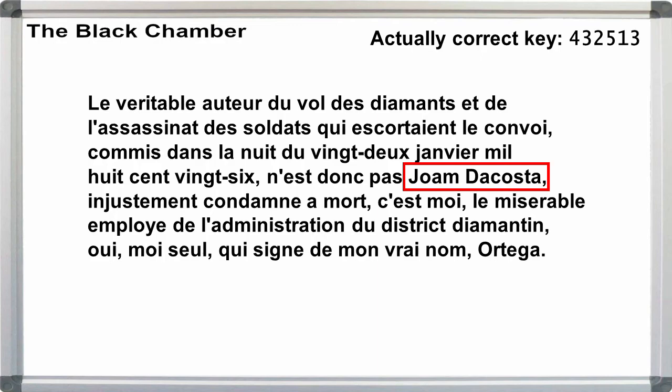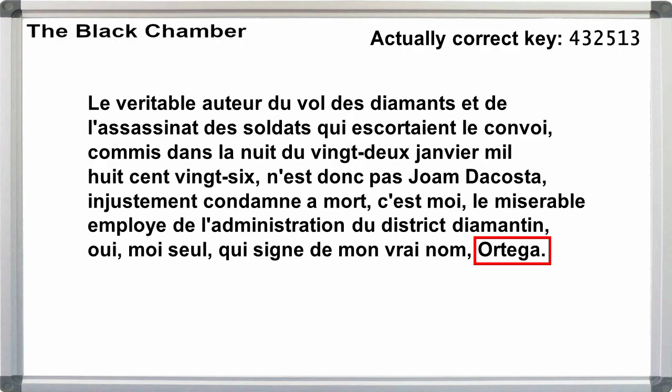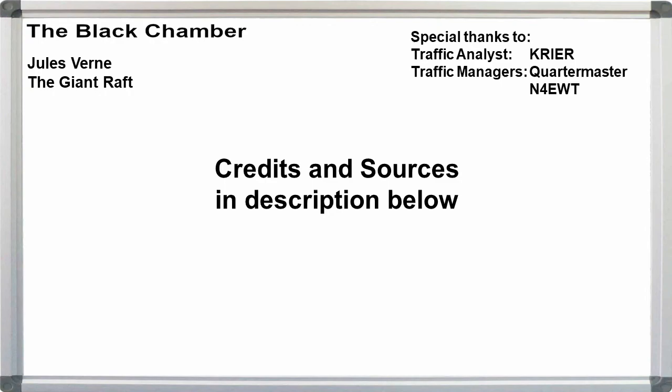From the plaintext, we can see that we actually had a large number of probable word attack points. Along with da Costa's name and the French word for diamonds, we also had the date of the crime and the crime itself, and Ortega's position in the diamond district administration. We don't get Ortega's name in the story until the very last moment, so we can't use that as a probable word. But as can be seen, we don't need it to solve Verne's unsolvable cipher.